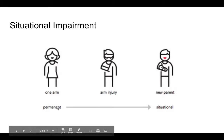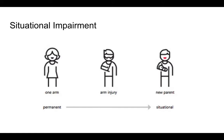A permanent impairment might be the loss of a limb, whereas an arm injury could be long-term, or it might be very situational if you're a new parent with that arm busy holding a child. The duration and severity of situational impairments vary greatly. It's not something that has been studied in any great depth — lots of people talk about designing for situational impairments, but very few have actually researched how to avoid them because they are so varied.